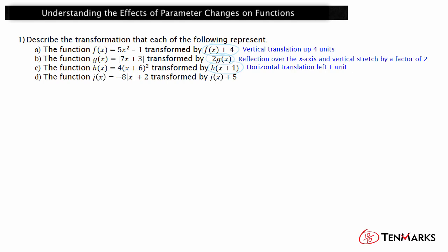The function j(x) = −8|x + 2| transformed by j(x) + 5. The 5 is being added to the function value. So this is a vertical shift. Since k is positive 5, this represents a vertical translation of j(x) 5 units upward.